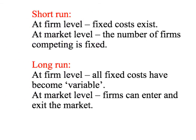To summarise: at the firm level, we're in the short-run if some fixed costs exist, but when all fixed costs have become variable, we're in the long run. At the market level, in the short-run the number of firms competing is fixed — firms cannot enter or exit. But in the long run at the market level, firms can enter and exit the market; in other words, the number of businesses competing in the market will be variable.